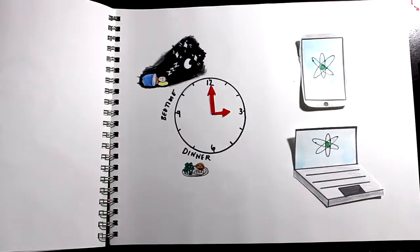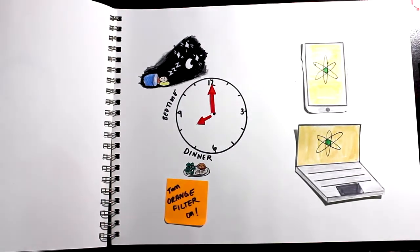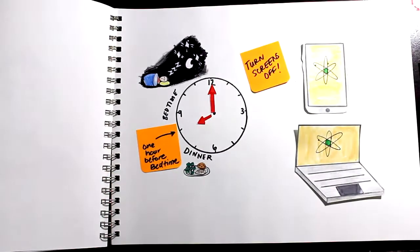One way to help you get a good night's sleep is to use an orange filter on your device after dinner and to turn all screens off at least one hour before bed.